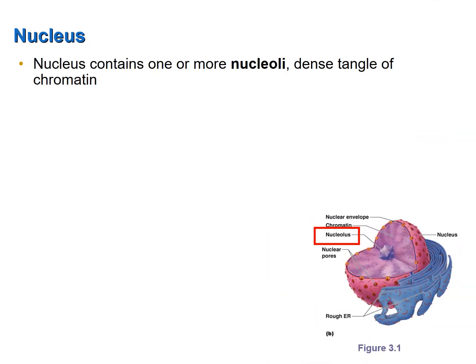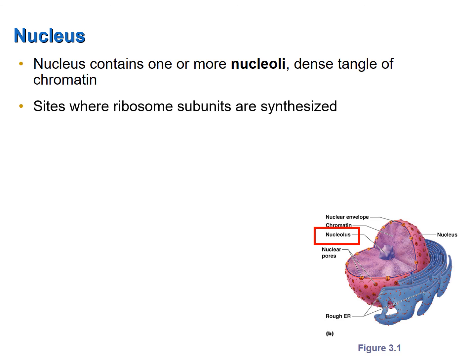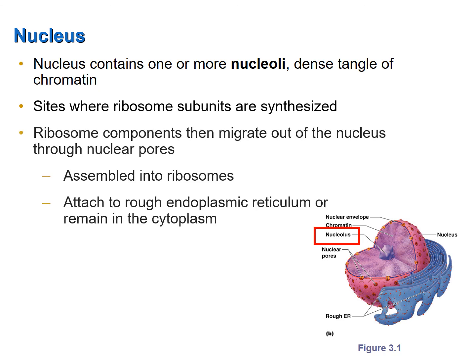Found within the nucleus are one or more dense tangles of chromatin called nucleoli — nucleolus is the singular form. The components of the ribosomes are synthesized at the nucleolus, then transported out of the nucleus through the nuclear pores, where they are assembled in the cytoplasm. The ribosomes are then attached to the rough endoplasmic reticulum or remain free in the cytoplasm.